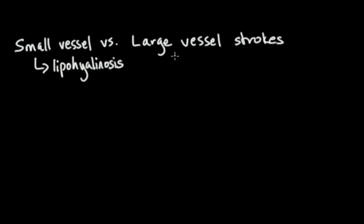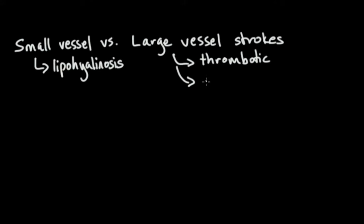This is opposed to large vessel strokes where the mechanism is very different. These strokes are usually either thrombotic or embolic. Thrombotic large vessel stroke happens when there's an atherosclerotic plaque in a large vessel like the internal carotid or the middle cerebral artery. The plaque ruptures, thrombus forms on the surface of the plaque, and the vessel closes off right there.